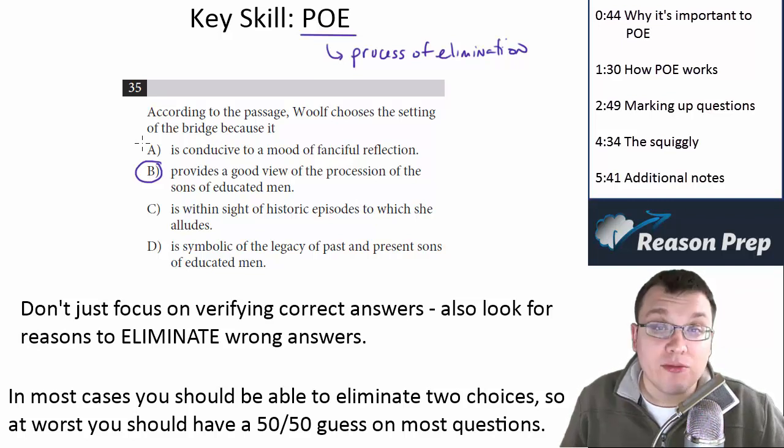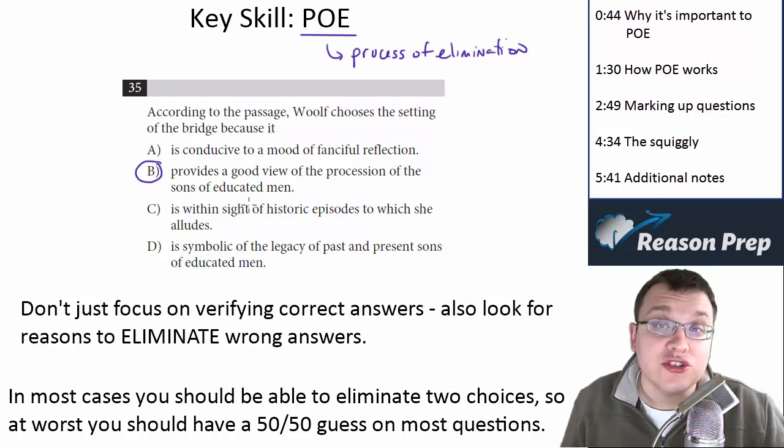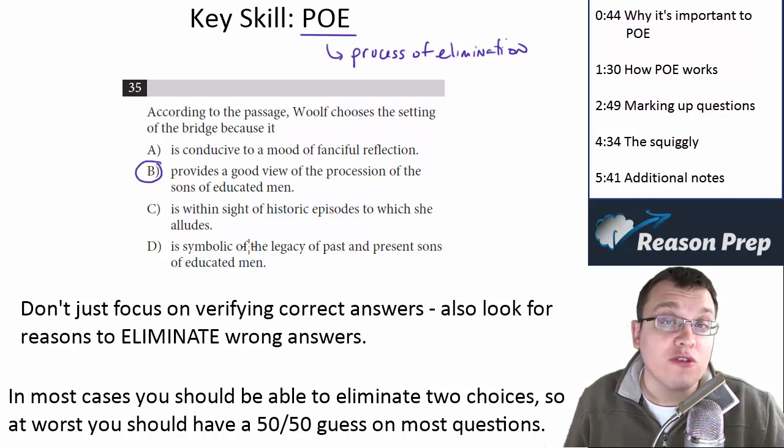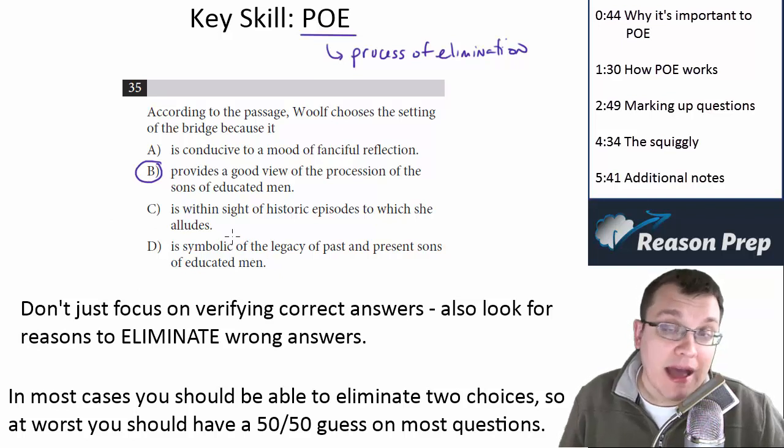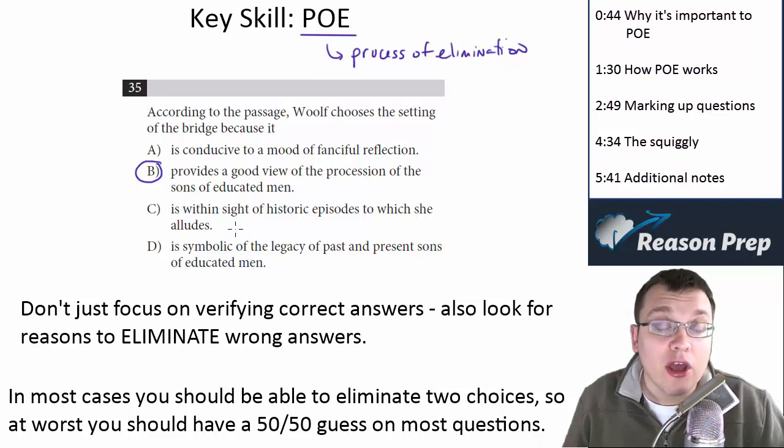And why this is a problem is twofold. Number one, pedagogically, just in terms of how I'm trying to teach, if I don't see any traces as to how a student got the answer, it's hard to figure out what went wrong. I mean, imagine if in a math section, you didn't have any of your work, you just had your answers. It'd be really hard to find out if you make mistakes, where the mistakes are coming from.